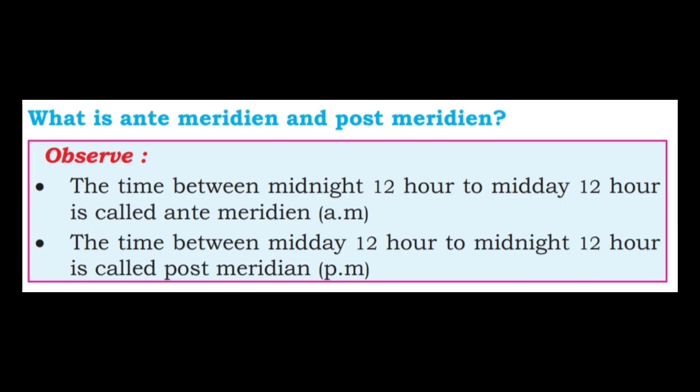What is anti meridian and post meridian? Observe: the time between midnight 12 hour to noon 12 hour is called anti meridian (AM), and the time from noon to midnight is called post meridian (PM).